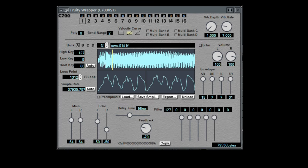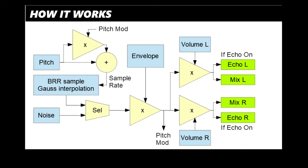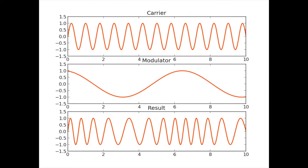The SPC700 also has an iconic echo delay feature. This feature allowed composers to add a sense of depth and space to their compositions. The echo delay feature came equipped with a multi-band EQ called the Fur Filter, which would allow composers to boost and cut certain frequencies from the delay effect itself. Another unique capability of the Super Nintendo was pitch modulation.